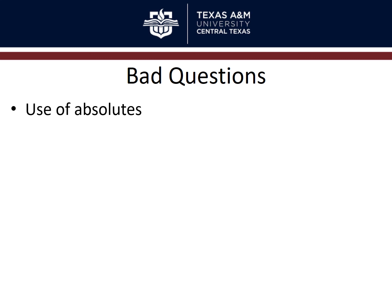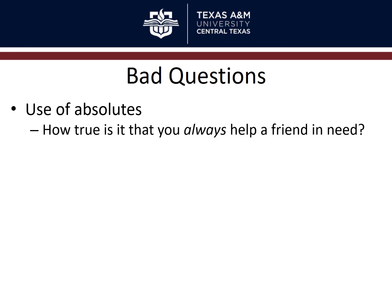Be careful about using absolutes in questions — words like 'always,' 'never,' 'everyone,' 'no one.' For example: 'How true is it that you always help a friend in need?' If your response scale also uses absolutes like 'always true' or 'never true,' you end up with confusing combinations like 'sometimes always' or 'never always.' Stay away from absolutes in the question itself, and keep them in the anchor labels if needed.